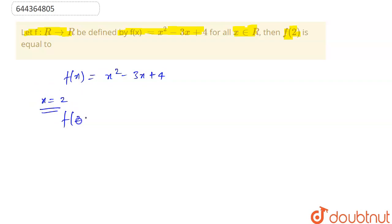So f of 2 will become f of 2 equal to 2 square minus 3 into 2 plus 4. So this will become 4 minus 6 plus 4. So it will become 4 plus 4 is equal to 8 minus 6 and this is equal to 8 minus 6 is 2.